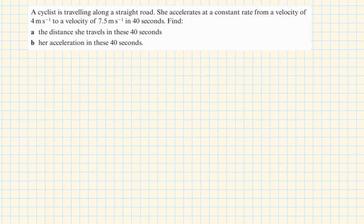A cyclist is traveling along a straight road. She accelerates at a constant rate from a velocity of 4 meter per second to a velocity of 7.5 meter per second in 40 seconds. Find the distance she travels in these 40 seconds.